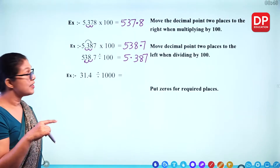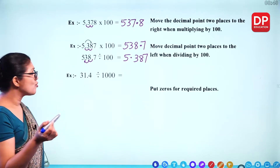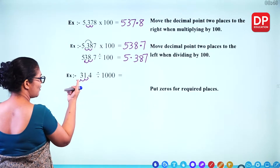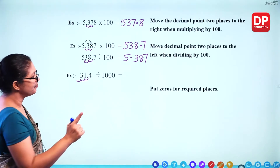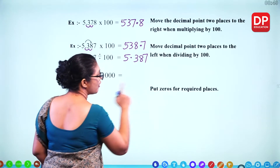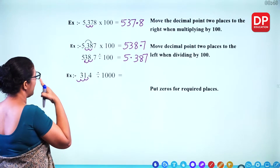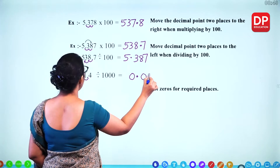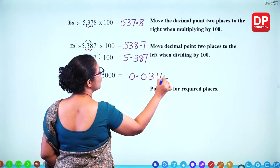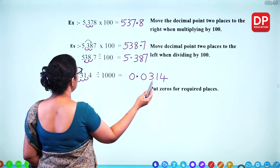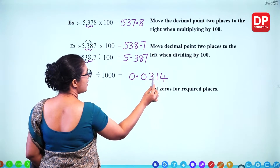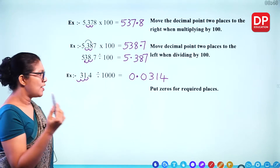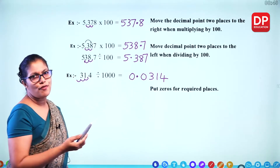For 31.4 divided by 1000: move 3 places to the left — 1, 2, 3. There are no digits, so put zeros in the required places. You can write it as 0.0314. Move 3 places to the left: if there is no number, put 0 for that place.